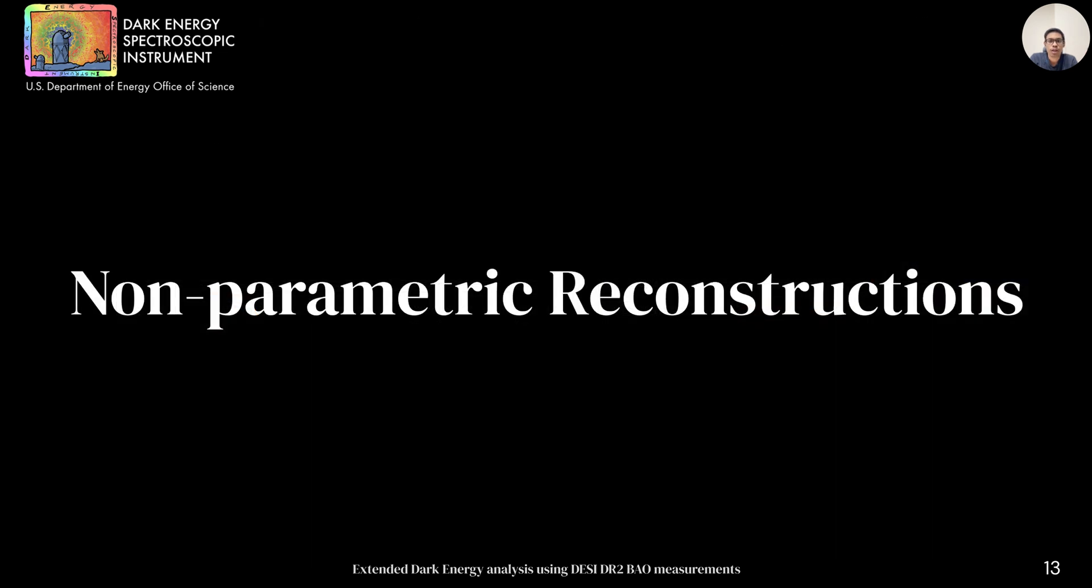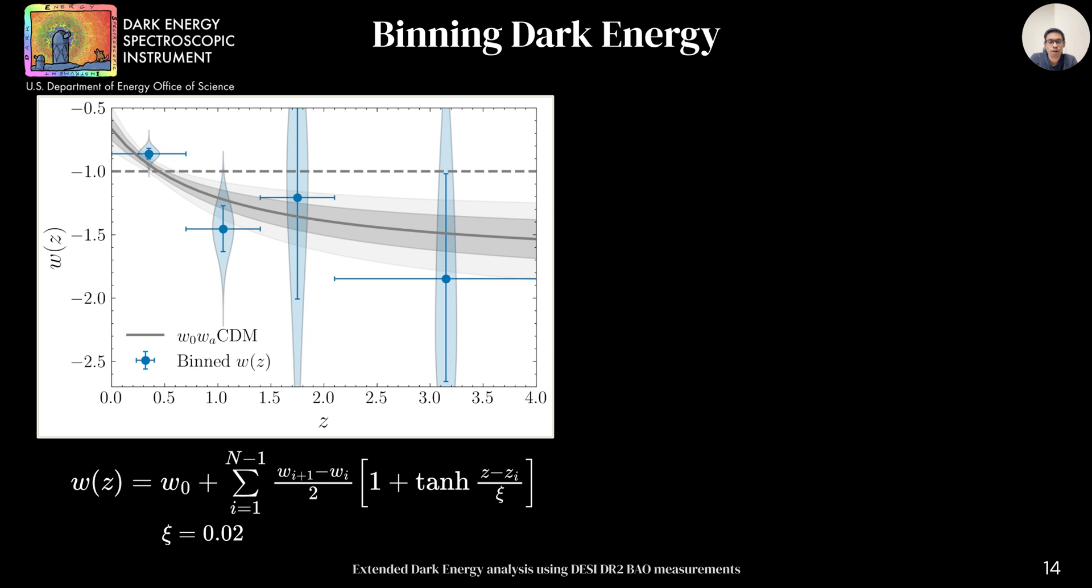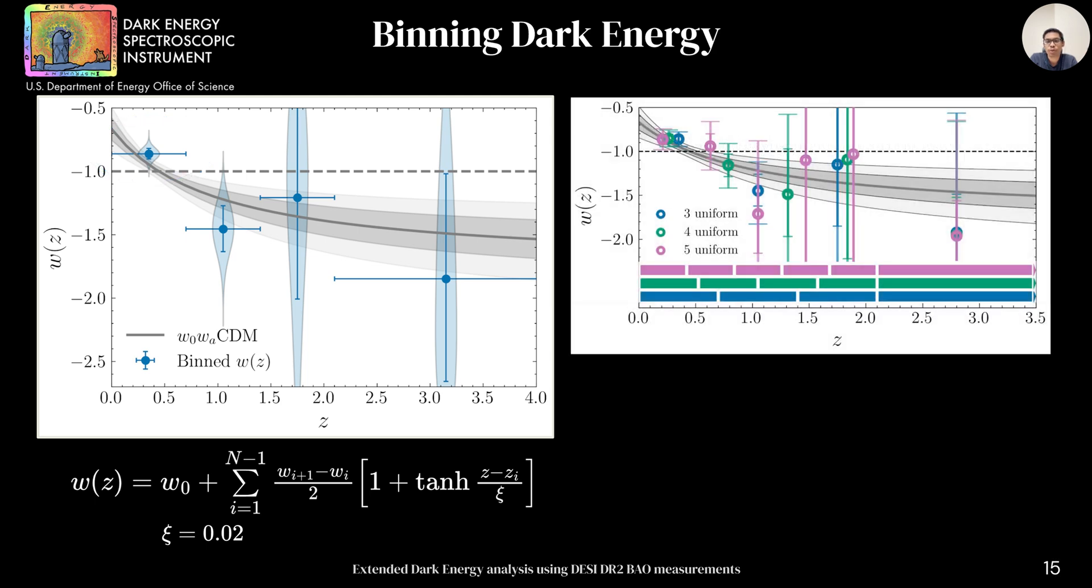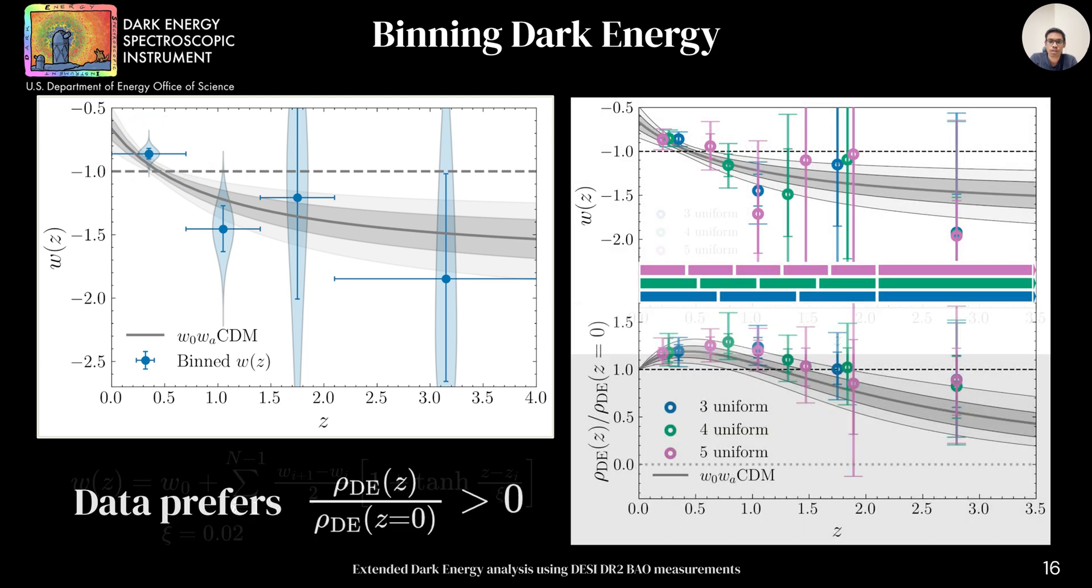Moving on to our next section where we use non-parametric techniques to reconstruct dark energy. We start by binning dark energy. Here on the left plot, I'm showing the results from three uniform bins ranging from 0 to 2.1 and one additional bin to model high z behavior. The lowest redshift bin shows a deviation of more than 3 sigma with an overall trend consistent with w0wa. This results remain fairly robust when additional bins are introduced or even when we provide similar freedom to dark energy density, illustrating data's preference for positive rho-de.